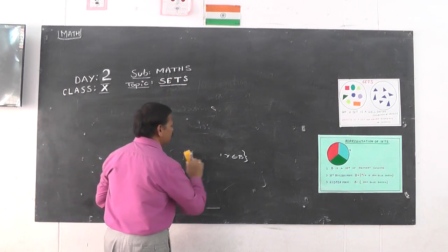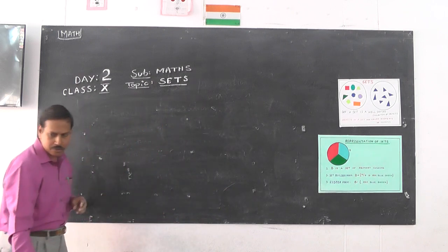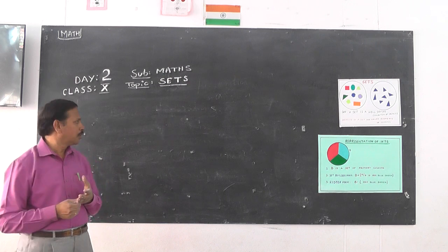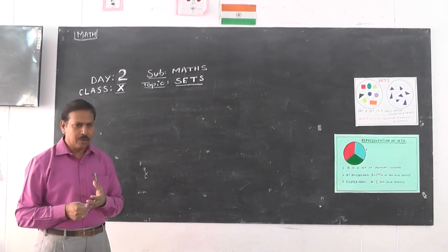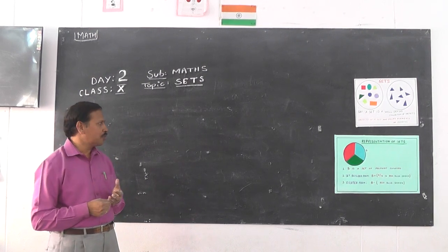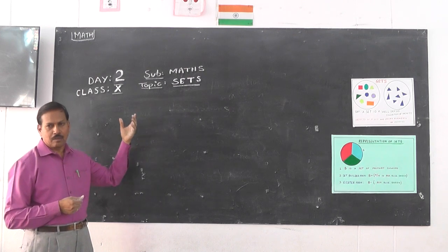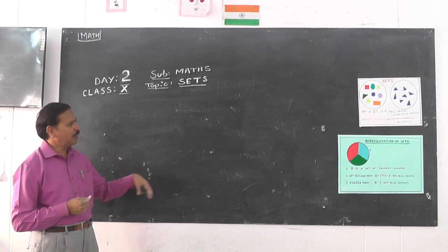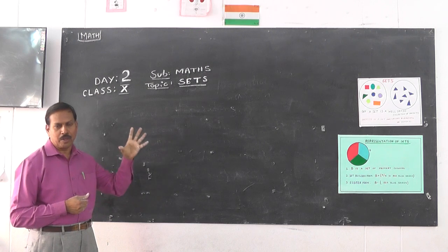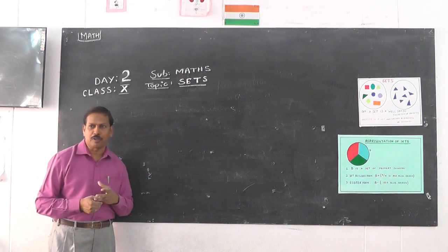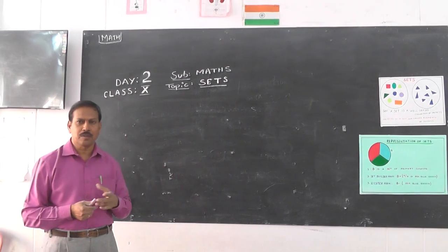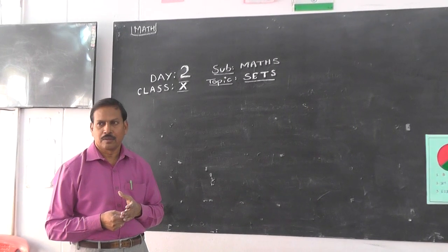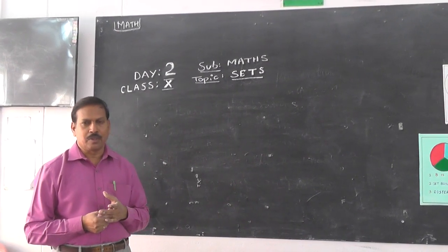Before concluding, this is Day 2. To revise: we started with equal sets and equivalent sets, then the concept of subset and proper subset, then types of sets — infinite set, finite set, empty set, and singleton set. Then we moved to basic set operations: union of sets A and B, and intersection of sets A and B. In the next session we will continue with more basic set operations. Thank you very much.